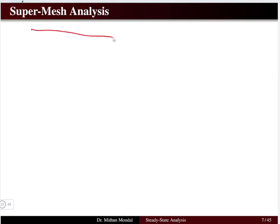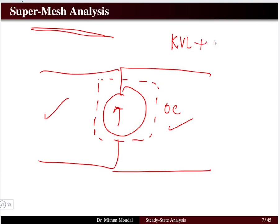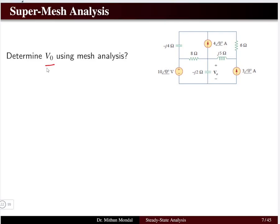Next is super-mesh analysis. In super-mesh analysis, if a current source exists between two meshes, it is a super-mesh problem. The current source is replaced with an open circuit, and we write the combined KVL equation for both associated meshes, plus a KCL equation relating the mesh currents to the source. Here we need to determine the voltage V_0 using mesh analysis, where V_0 is the voltage across the capacitor (−j2 Ω).